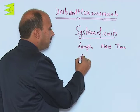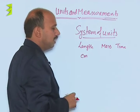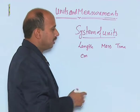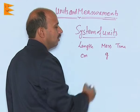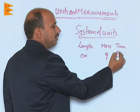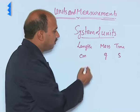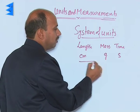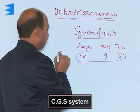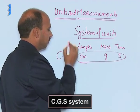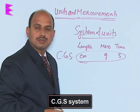If you are measuring length in centimeter — that is cm — mass is measured in grams, and time is measured in second. This system is known as CGS system.